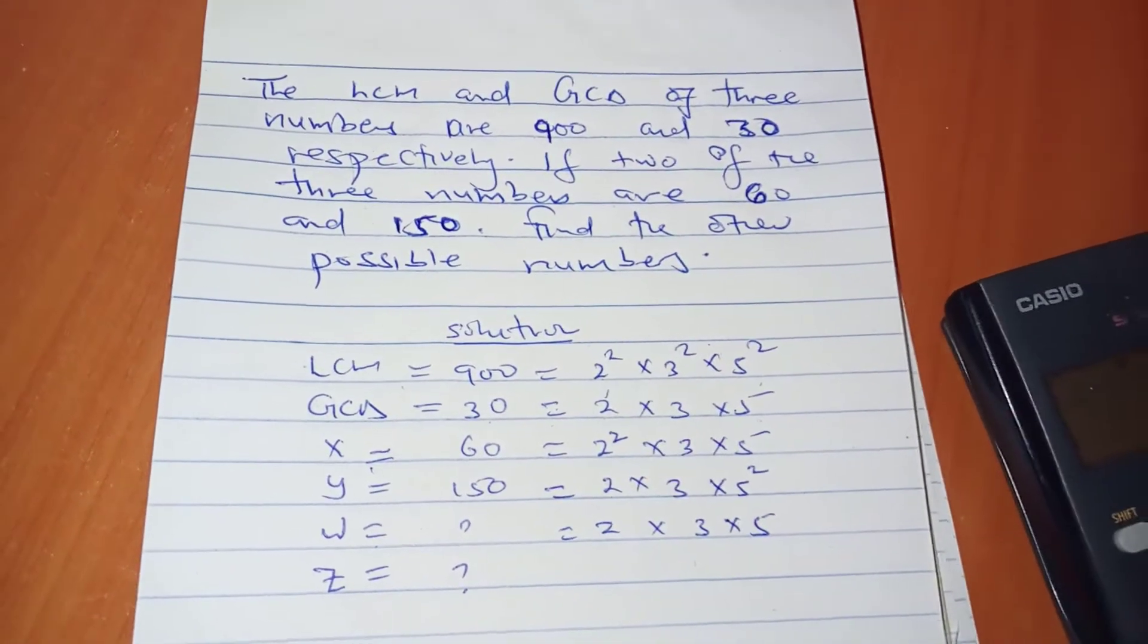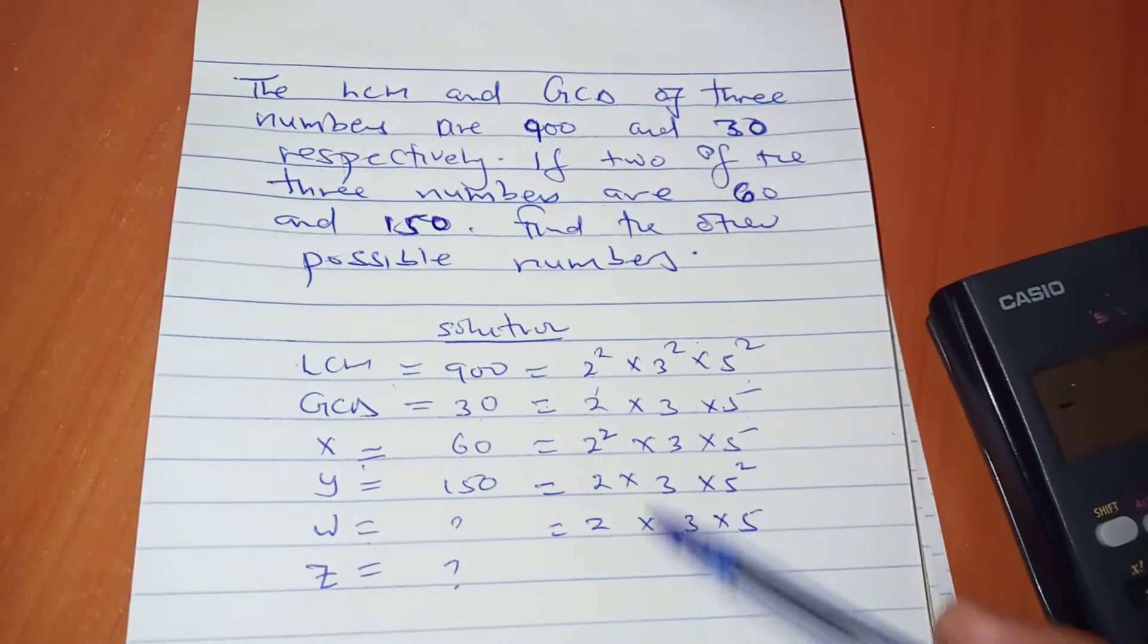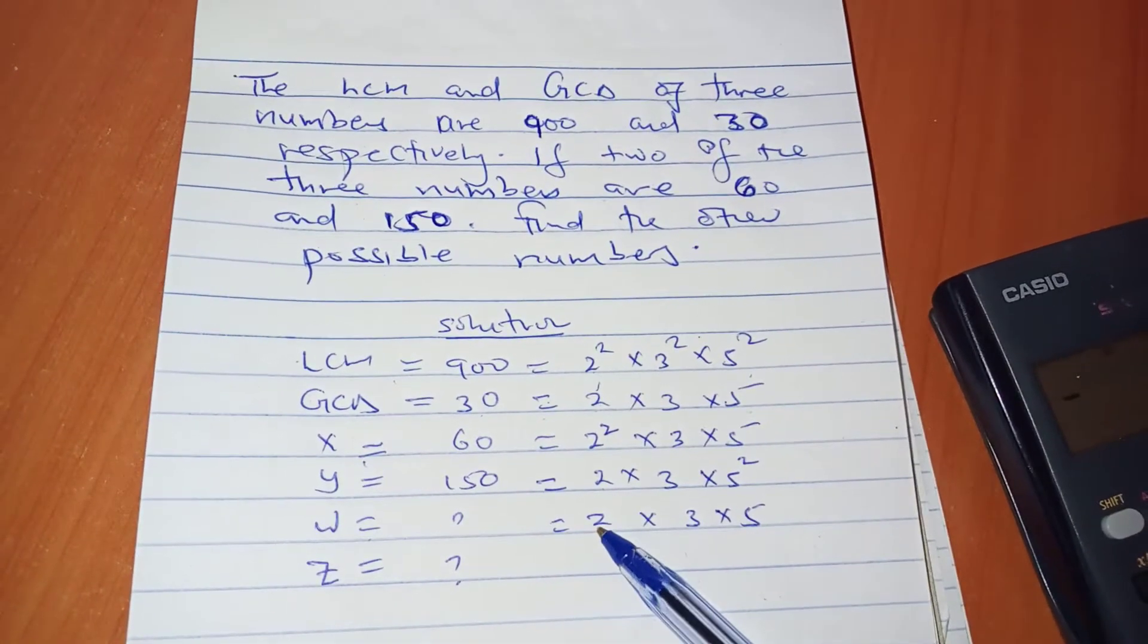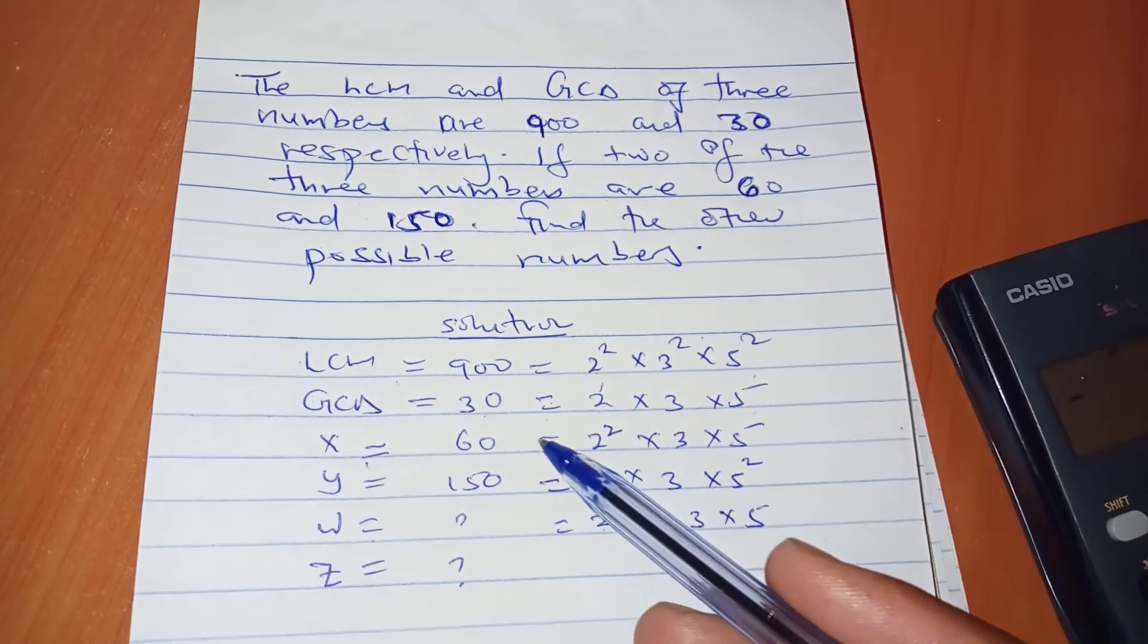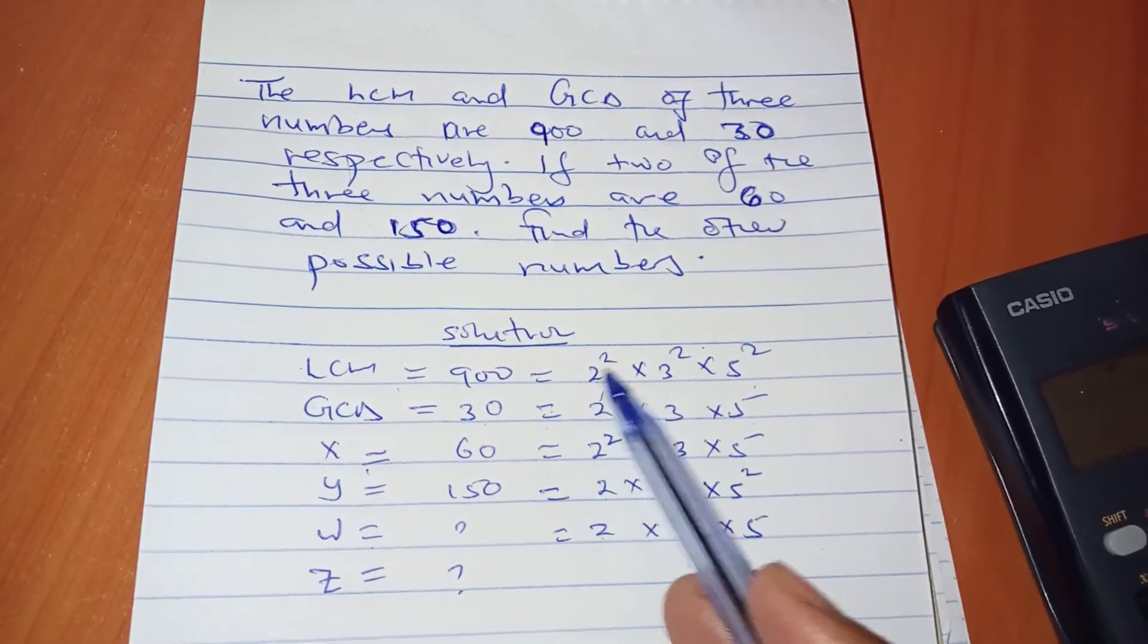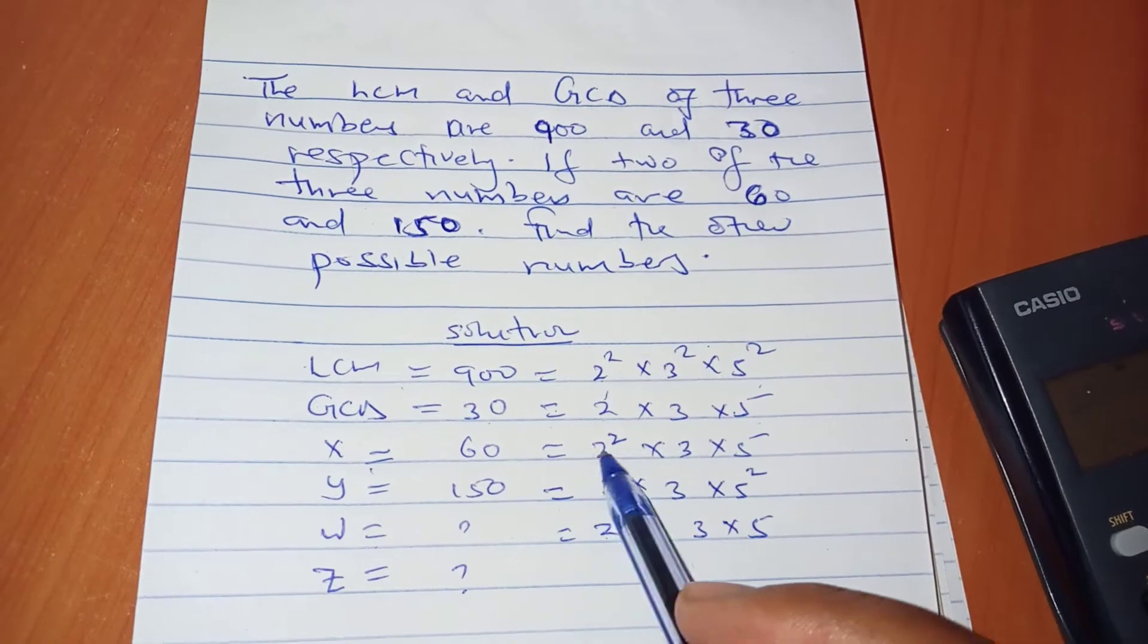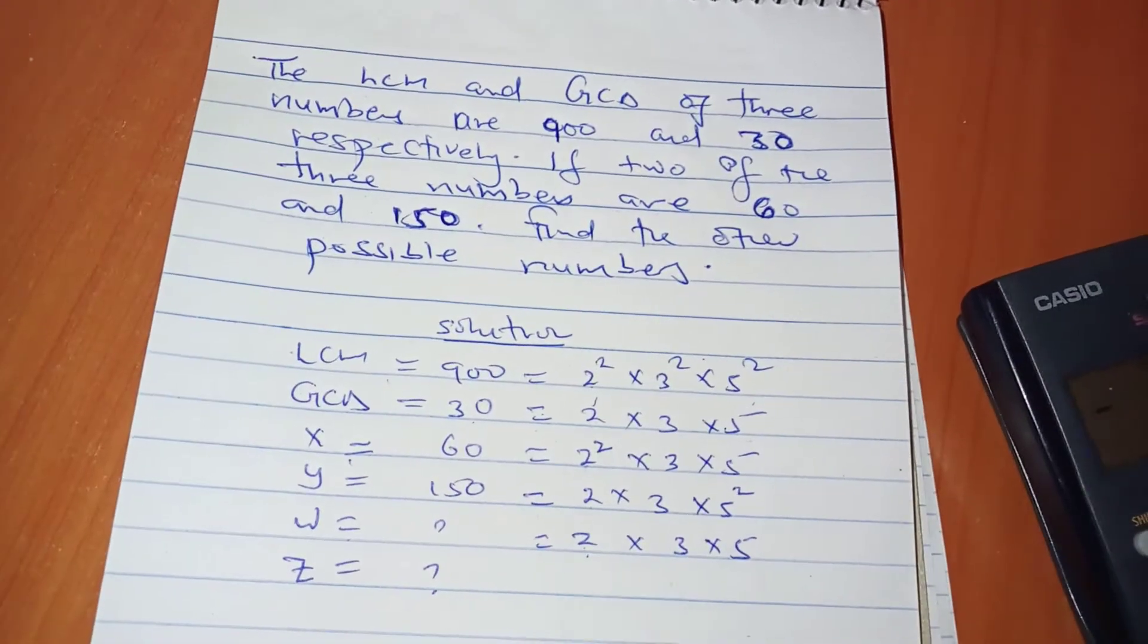The LCM requires 2². When I look at these two numbers, 60 has already provided 2², so the unknown number doesn't have to. When LCM requires a factor, one of the three numbers should provide that requirement. So if 60 has provided 2², the rest don't have to. That's why I maintain 2¹ when finding the minimum.